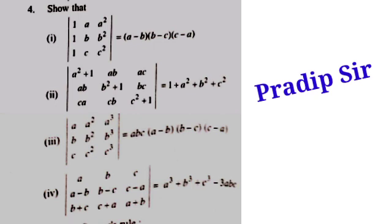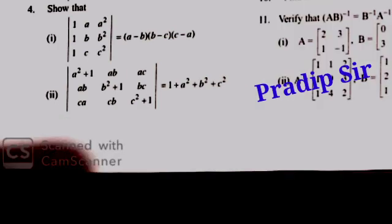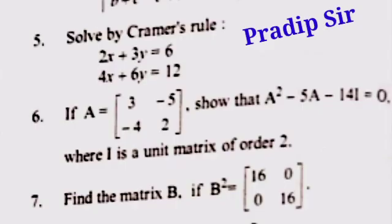The next question is also an important and easy one. The third one is a tricky question where you can take common factor 'a' from the first row, 'b' from the second, and 'c' from the third — that means you will get '1, 1, 1' and can find two zeros. Then question five is Cramer's rule, question six is also an important question, and question seven is also an important one.